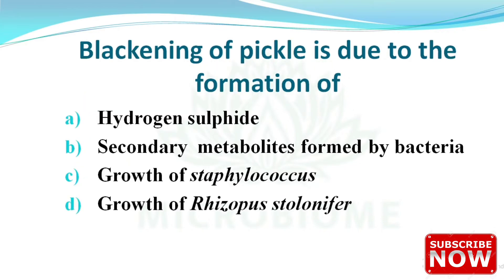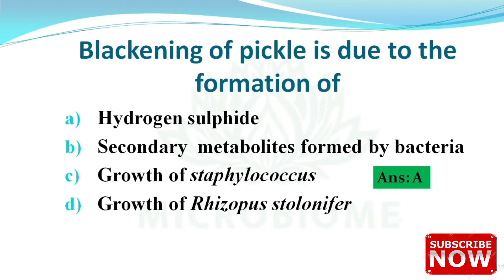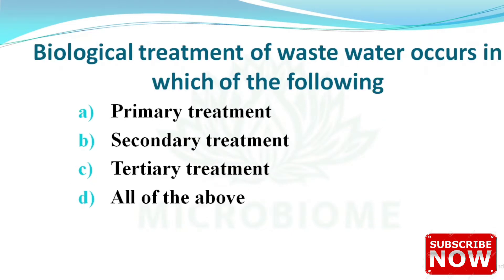Next: blackening of pickle is due to the formation of which substance? The options are hydrogen sulfide, secondary metabolites formed by bacteria, growth of Staphylococcus, and growth of Rhizopus stolonifer. The right answer is option A — hydrogen sulfide.